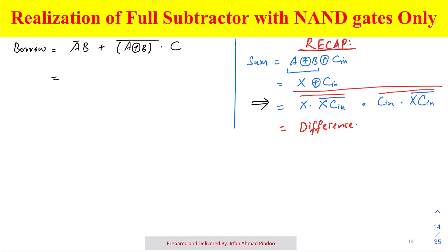We will shuffle this a little bit. We can also write it as A bar B plus A XOR B complement dot C, and I will use double complement. If you double complement this, it should not change our equation because A double bar is like A only.